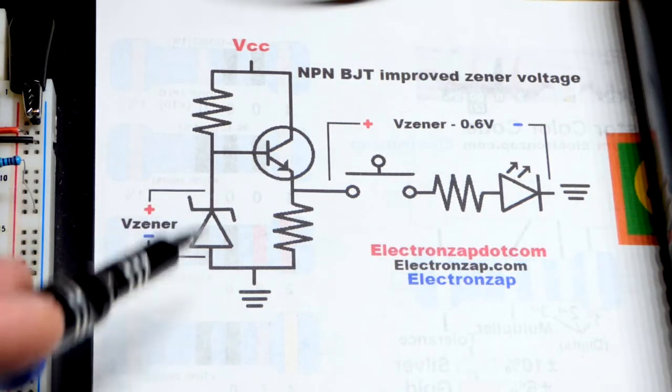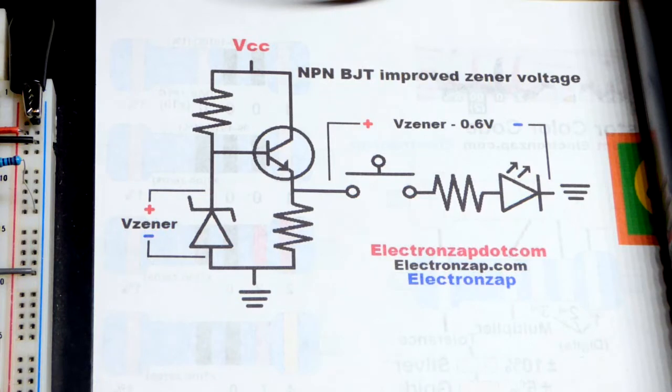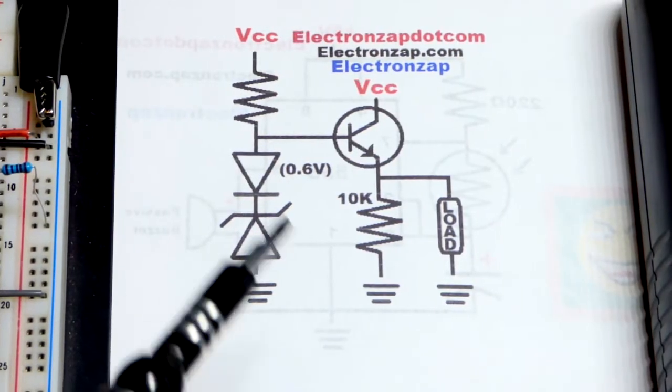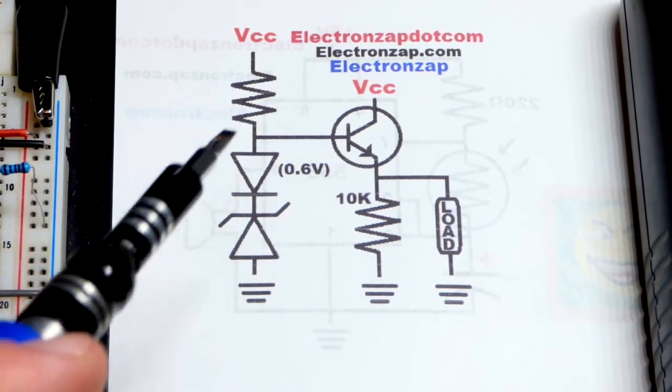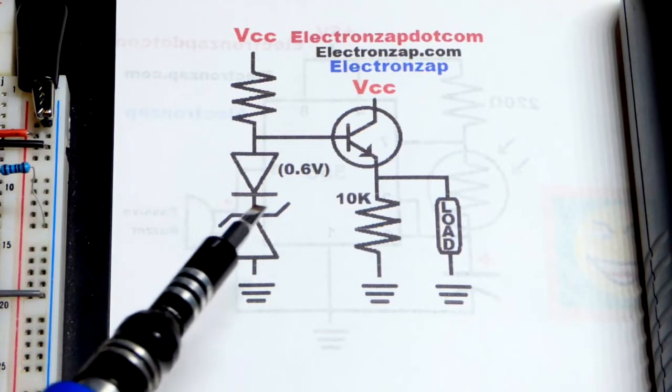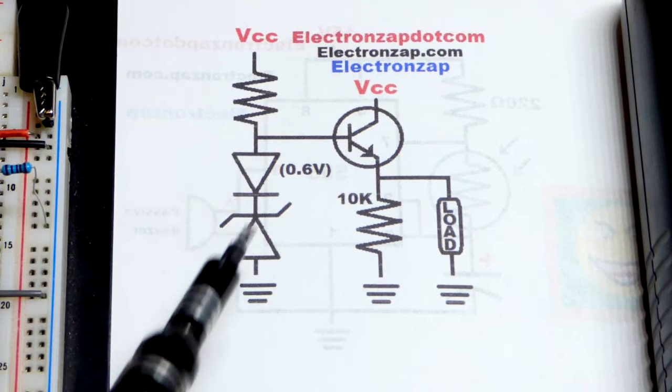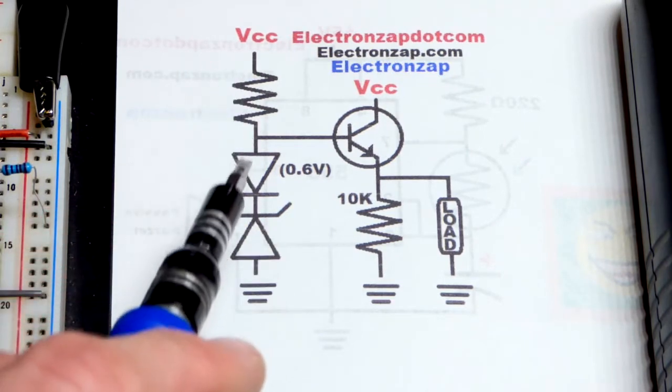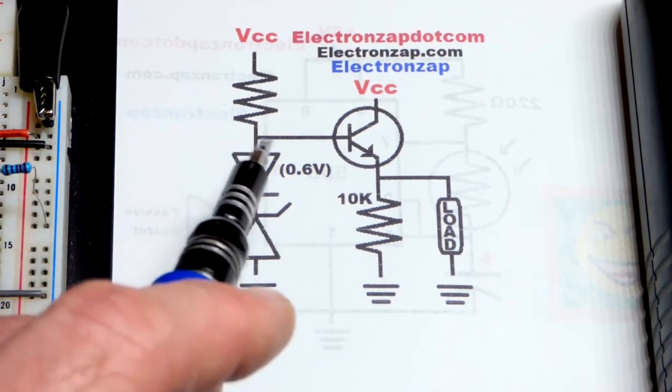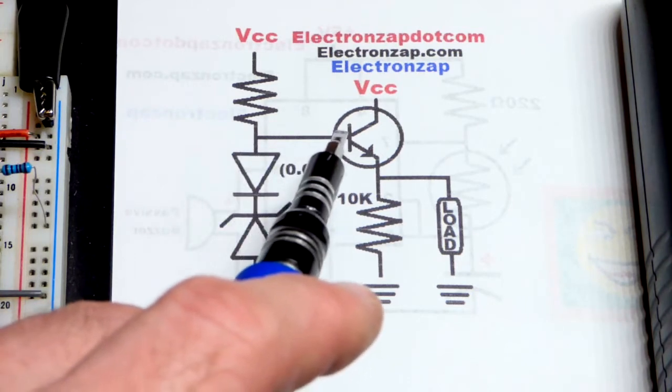So we're going to show a way to compensate for that. Here's what we're going to do in schematic form. All we're going to do is put a rectifier diode in series with the Zener diode. We'll have a one kilo ohm resistor setting the current through those two diodes.